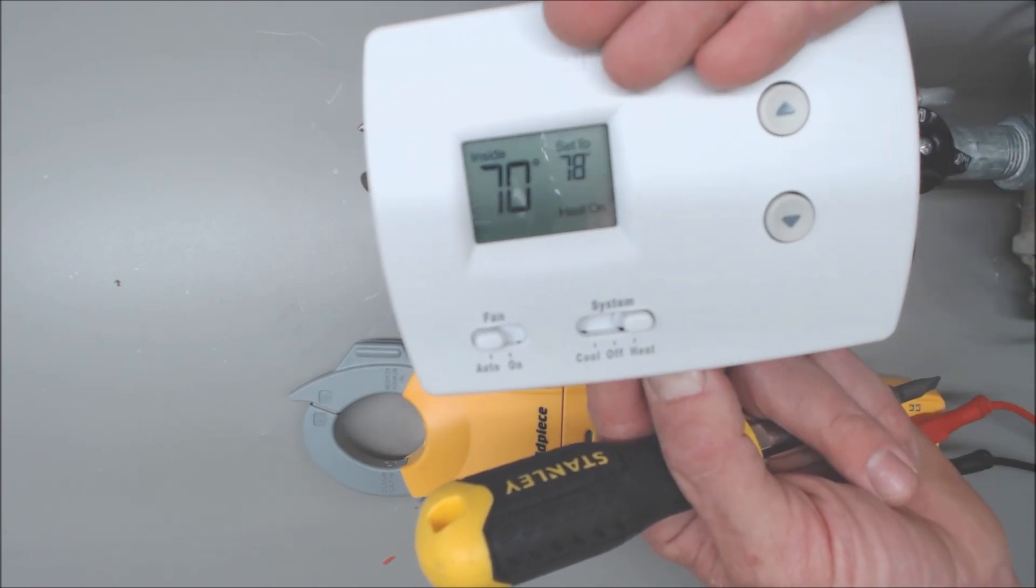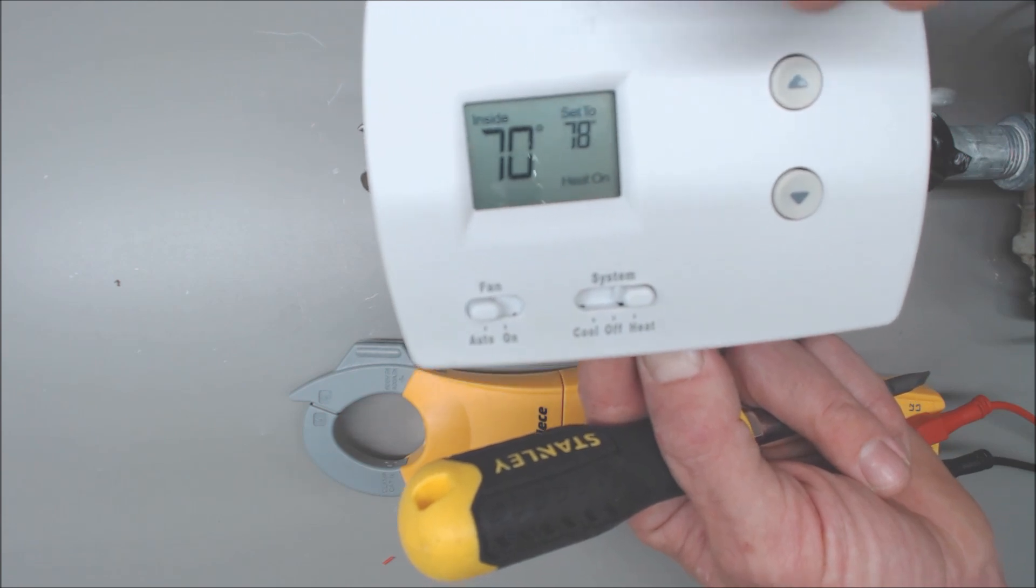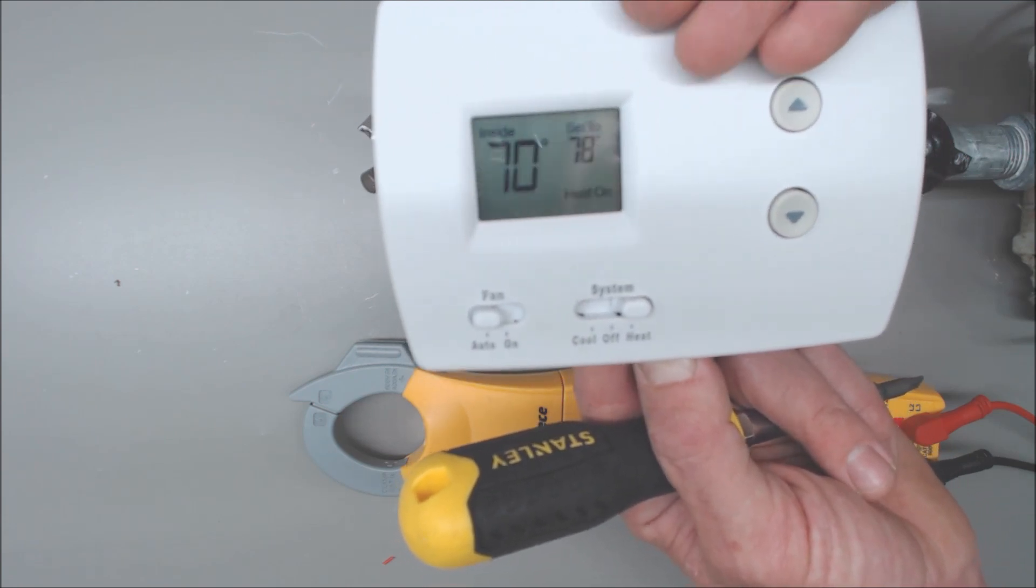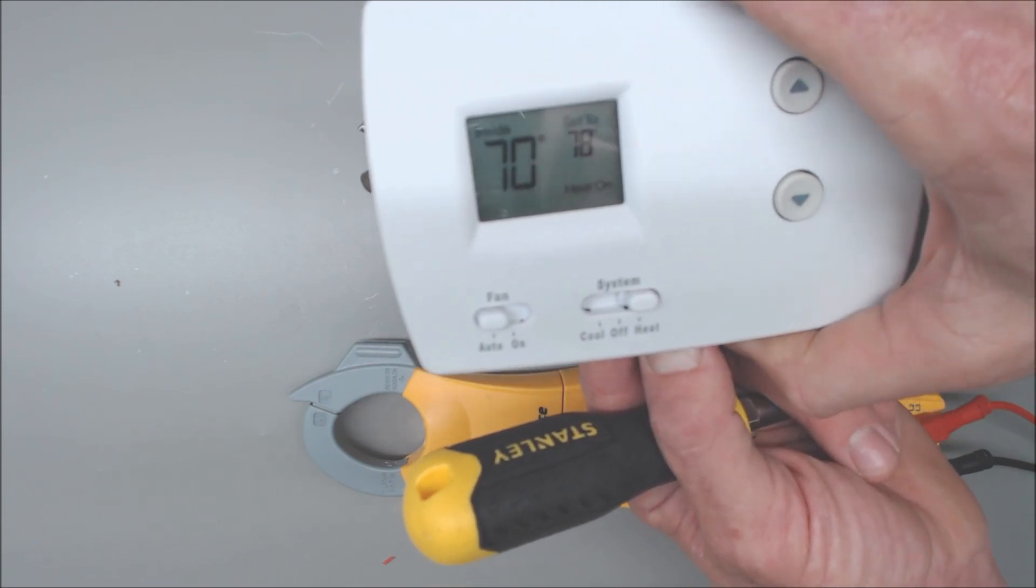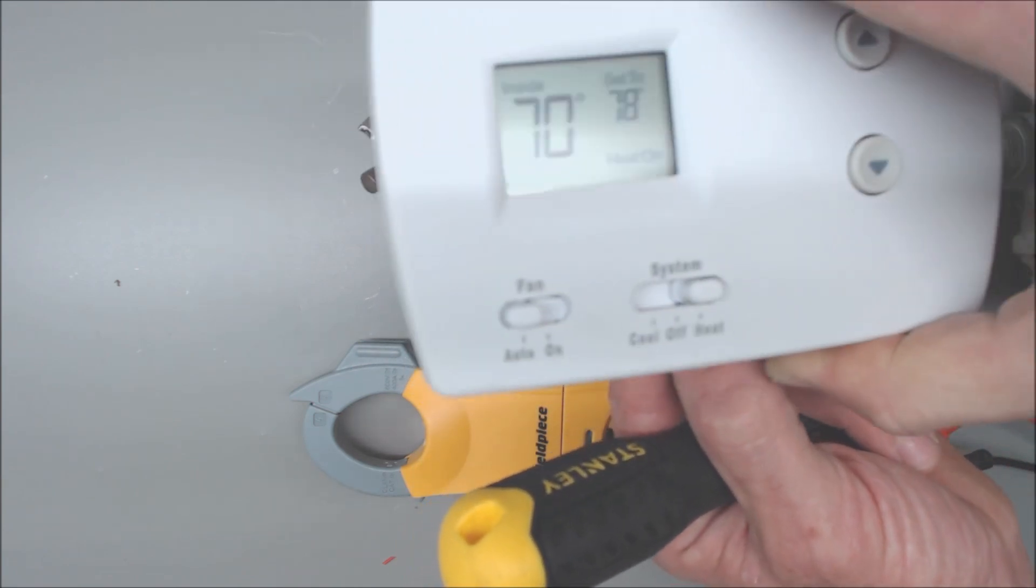In this case, we're using a Pro 3000, which is rated for 750 millivolt gas valves. You have to have batteries in it; you can't power it by the 750 millivolts.